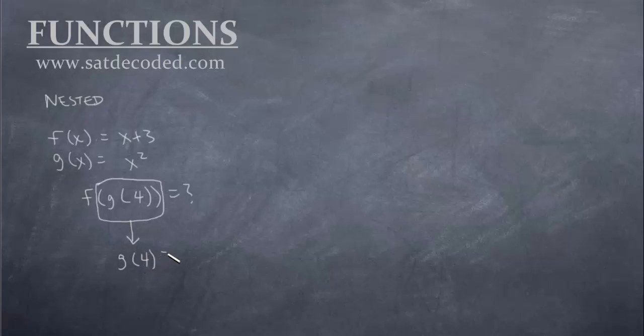Using our basic skills from the previous videos, we know that the 4 by itself is the input. So let's use the master formula for the g function, g(x) = x². So g(4) is just 4², which equals 16.